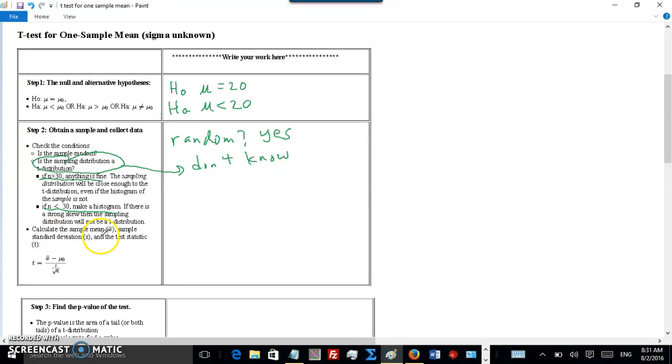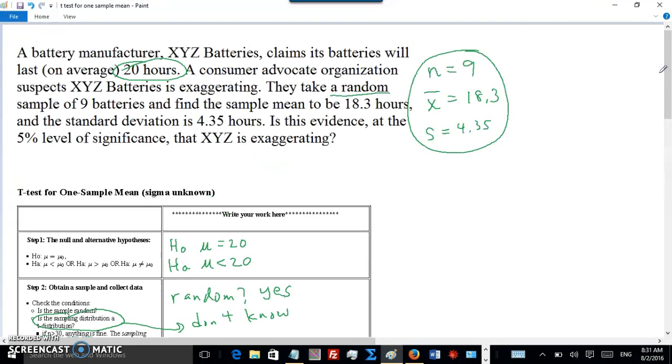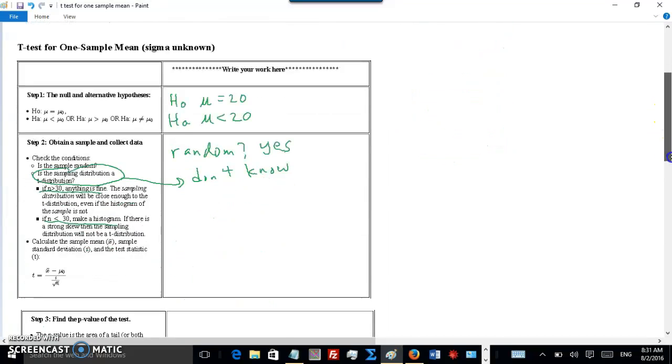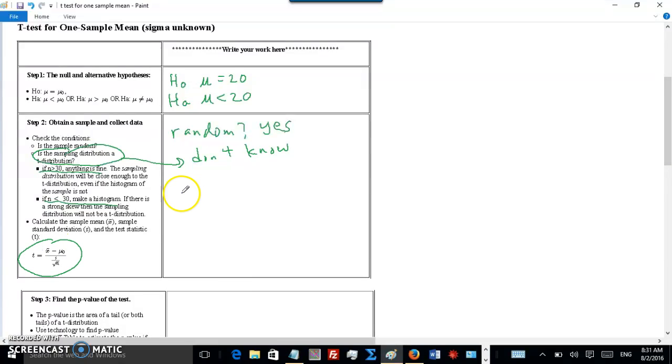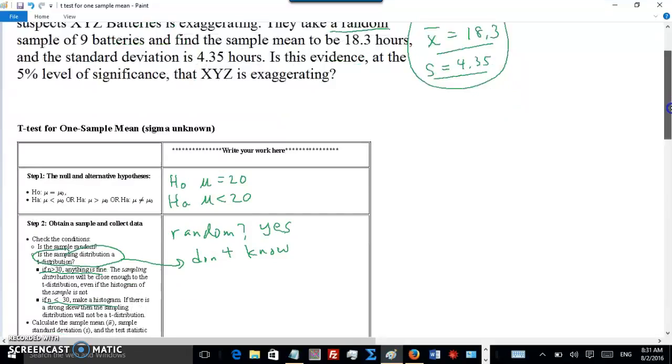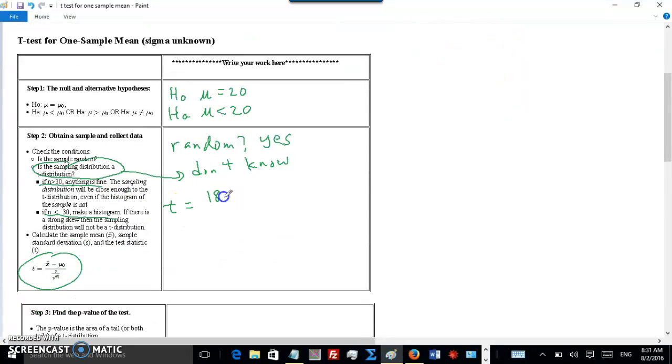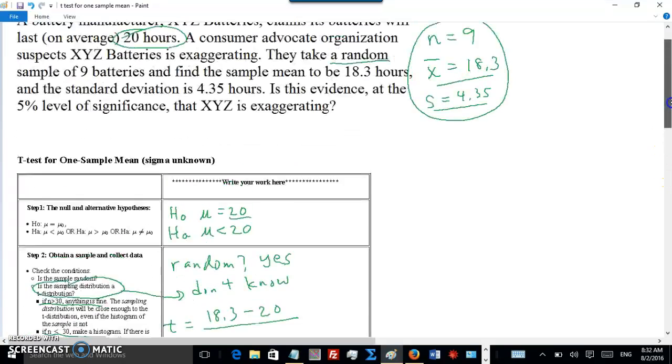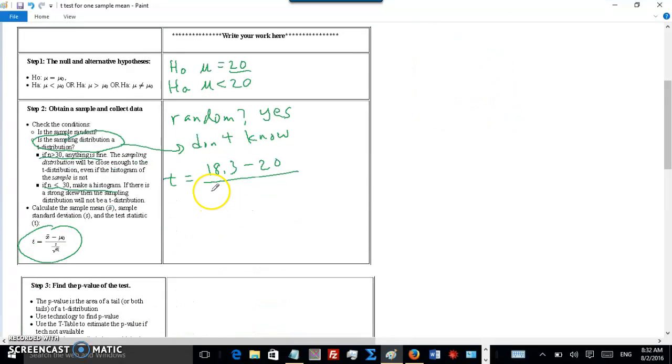Next, calculate the sample mean. Okay, we did that. Well, we didn't, but the consumer advocacy group did. Mean is here, standard deviation right there. So we just have to go straight to computing the T statistic. So X bar, which is 18.3, minus the null value, which is 20, divided by the standard error, which is S, which is 4.35, divided by square root of 9. Let's do these calculations. 18.3 minus 20 is negative 1.7.